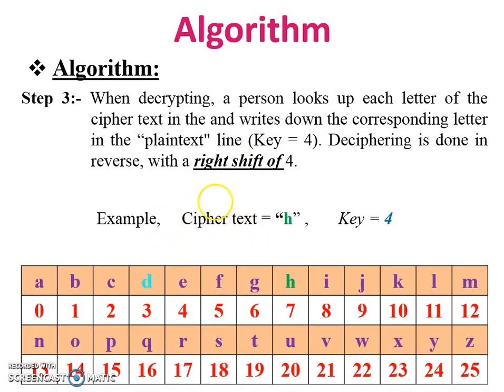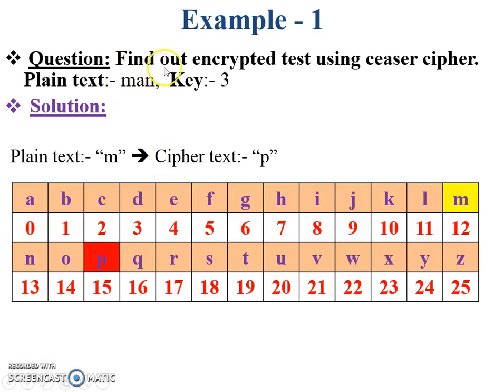My ciphertext is H and key = 4. So from H, go to the right shift of 4: one, two, three, four. My plaintext is D. You can see here, this is the reverse process - it is decrypting.